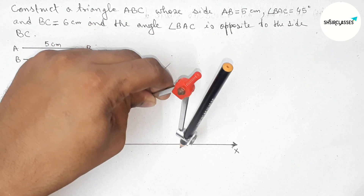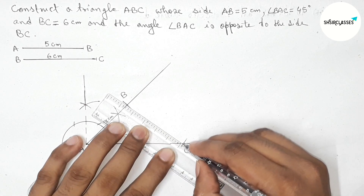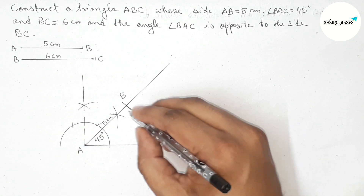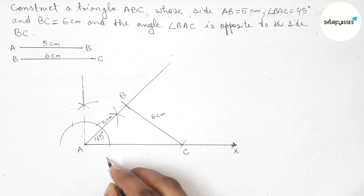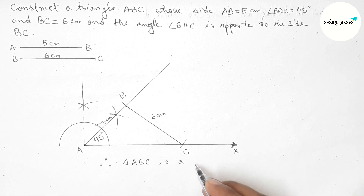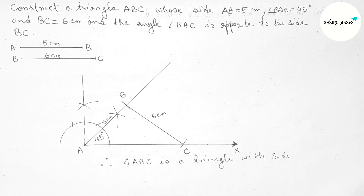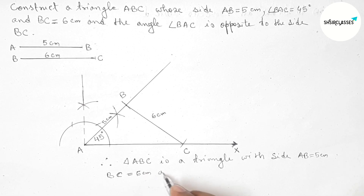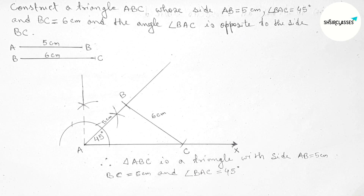Putting the compass on point B and cutting here to mark point C, then joining side BC to complete triangle ABC. So this is the 6 centimeter side. Therefore triangle ABC is constructed with AB equal 5 centimeter, BC equal 6 centimeter, and angle BAC equal 45 degrees. That's all, thanks for watching. If this video is helpful to you, please share it with your friends.